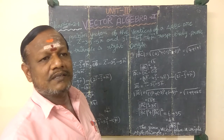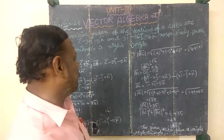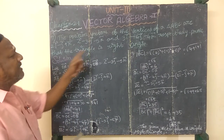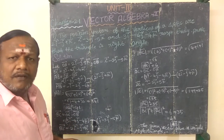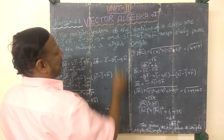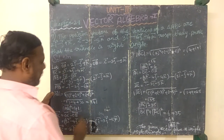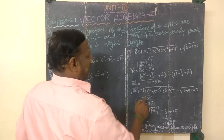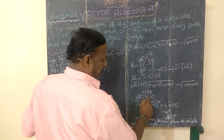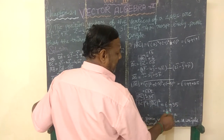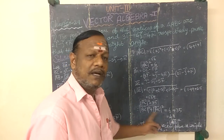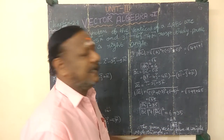Computing BC vector and CA vector, the square of one side is equal to the sum of the squares of the other two sides, confirming the Pythagorean condition. Therefore the given vectors form a right-angled triangle.